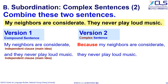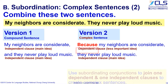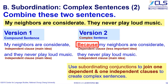So, we can use 'because' to point it out. We first transform the first sentence into a dependent clause by adding the subordinating conjunction 'because.' The other sentence, 'they never play loud music,' is the core claim — that is, the main clause — and we leave it in its original form. Now, we put these two clauses together. In other words, we use subordinating conjunctions to join one dependent and one independent clause to create a complex sentence.